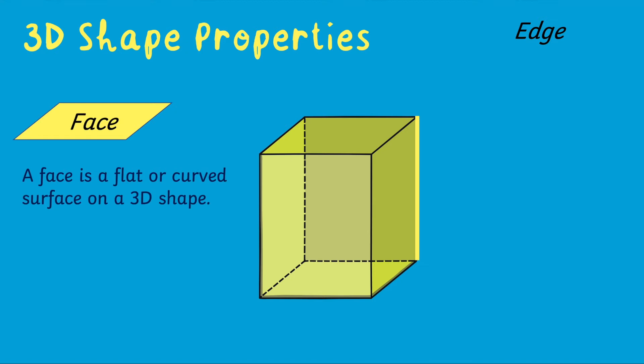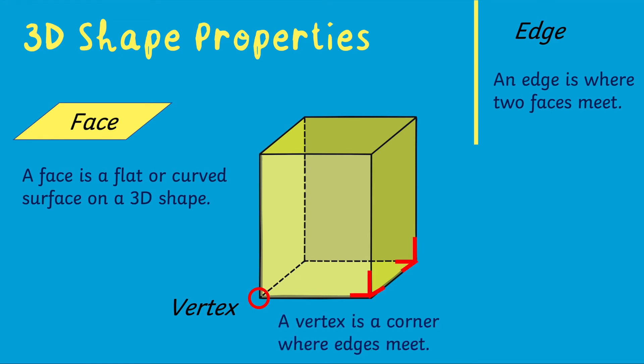Edges. An edge is where two faces meet. For example, a cube has 12 edges. Vertices. A vertex is a corner where edges meet. The plural is vertices. For example, a cube has eight vertices.